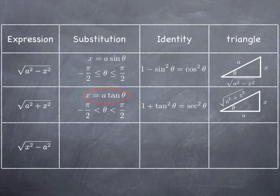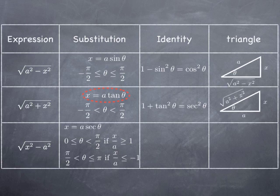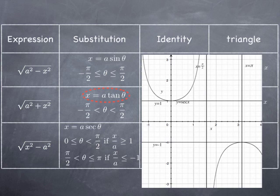Looking at the last row in the table, we want to express x squared minus a squared under a square root in terms of theta. In that case we use x equals a secant of theta. We have some restrictions to ensure the secant is one-to-one: if x over a is greater than 1, we restrict theta to zero included to pi over 2 excluded; if x over a is less than or equal to negative 1, we take theta greater than pi over 2 and less than or equal to pi. This is best understood by looking at the graph of the secant function, which is either greater than 1 or less than negative 1, and the restriction makes it one-to-one on each branch.